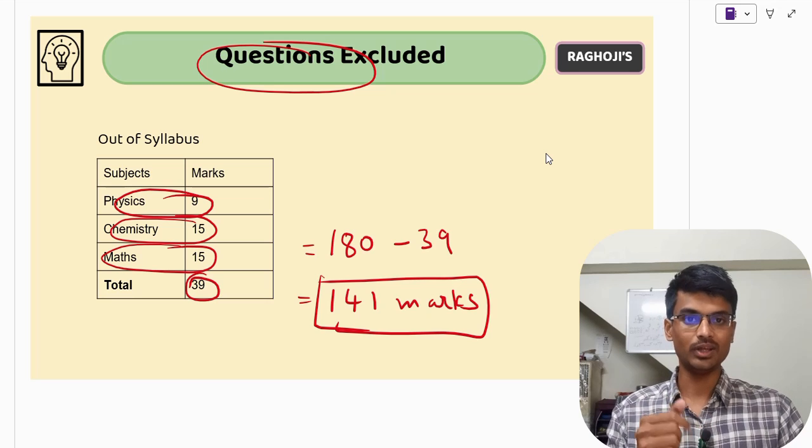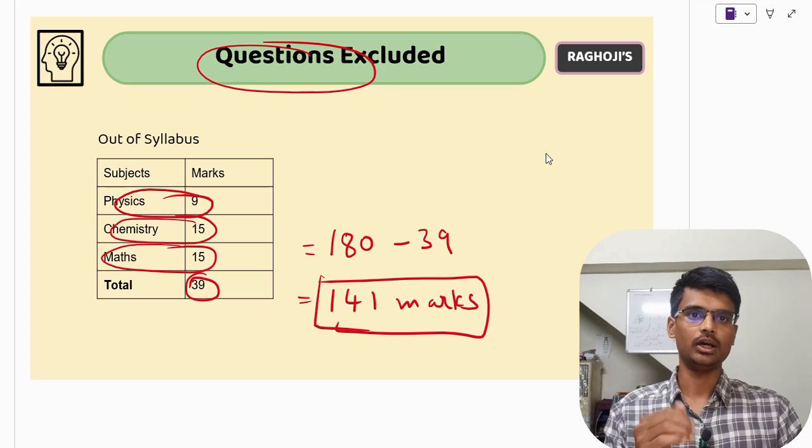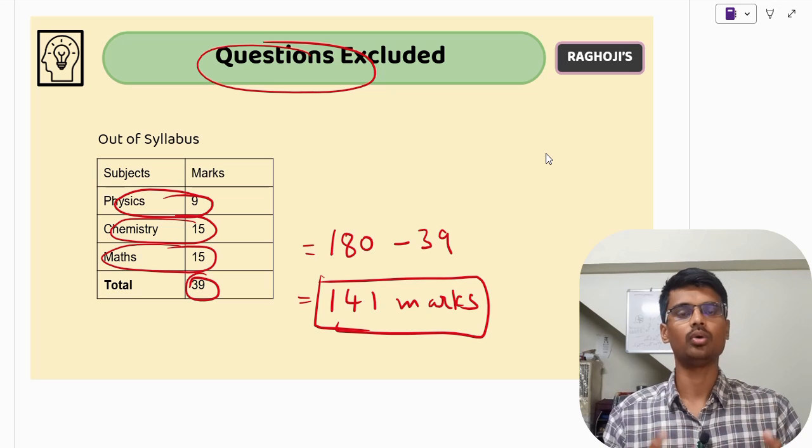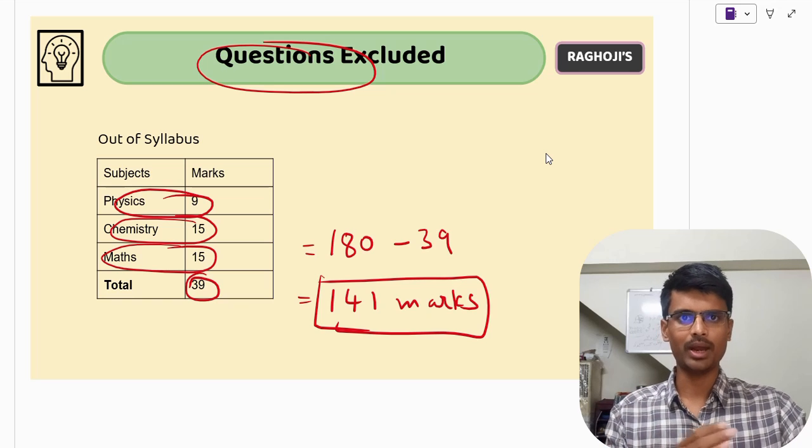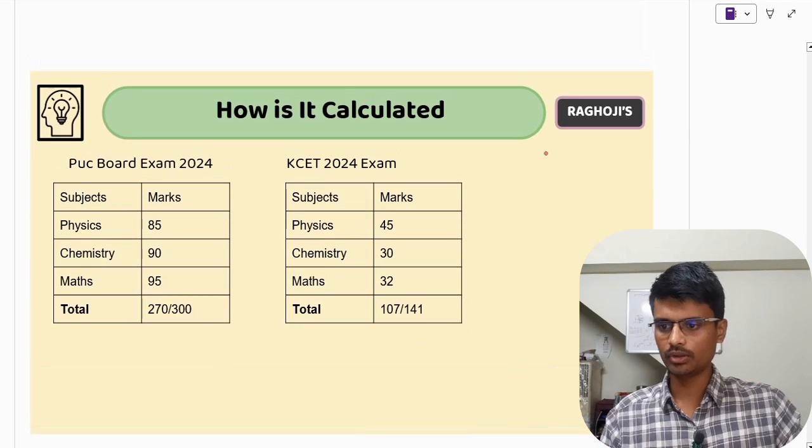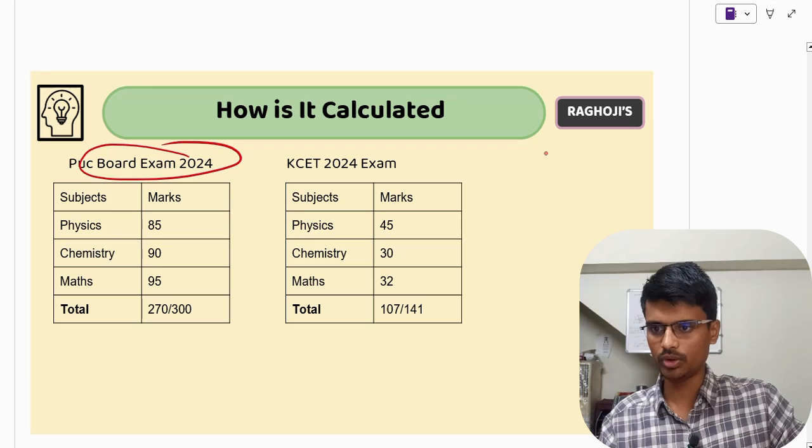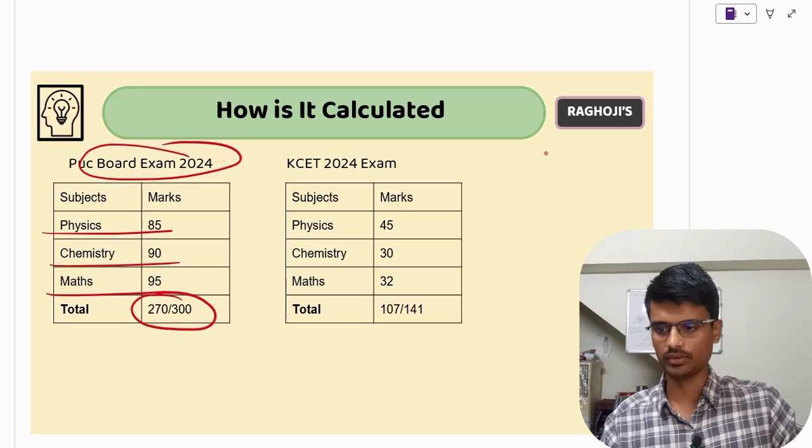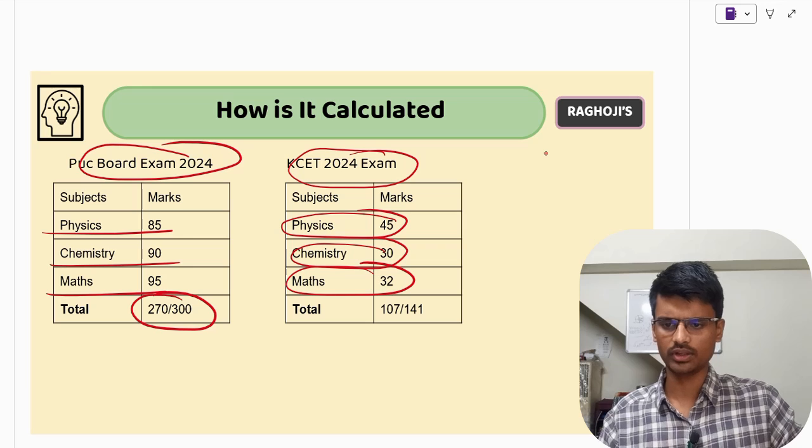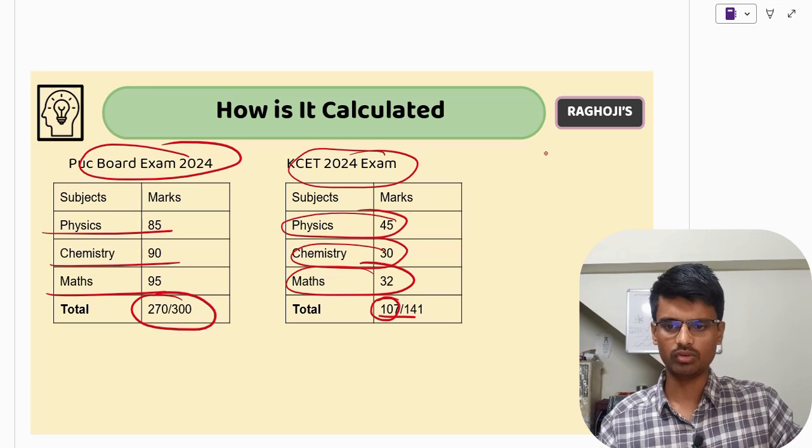Now the 50% weightage is for 141 marks. I will explain this with an example. One more thing that I want to share with you all is, you will find many YouTube videos on KCET rank versus marks, different kinds of analysis or different updates related to KCET. But I would suggest only trust where you follow. You can follow as many videos as you want, but always if you are watching a video, if you get some information related to KCET, first I would suggest go to KEA website.